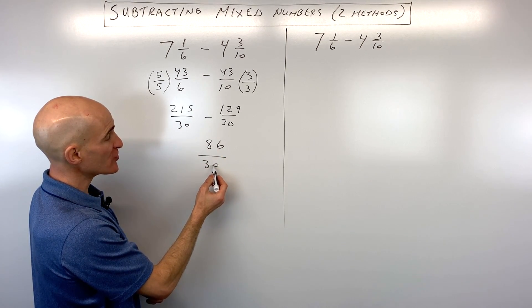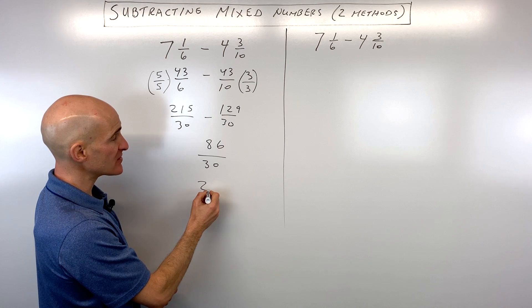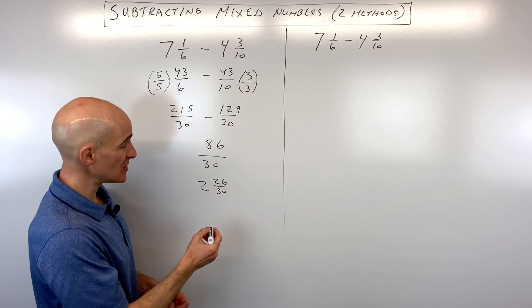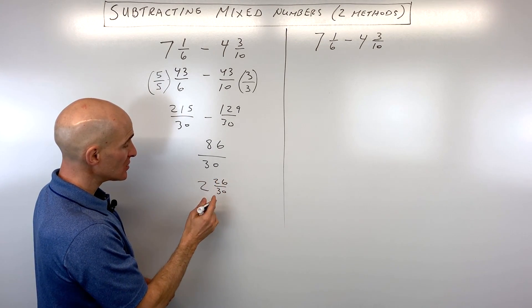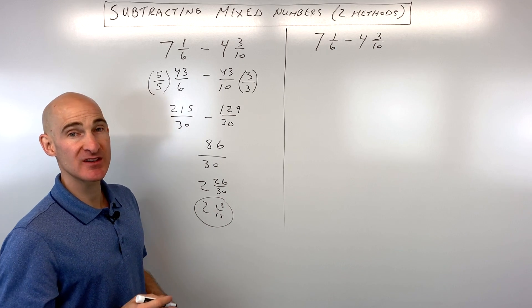And now all we have to do is just turn this back into a mixed number. 30 goes into 86 two whole times with 26 left over. So that's 2 and 26 thirtieths, which you can then reduce to 13 fifteenths. So 2 and 13 fifteenths.